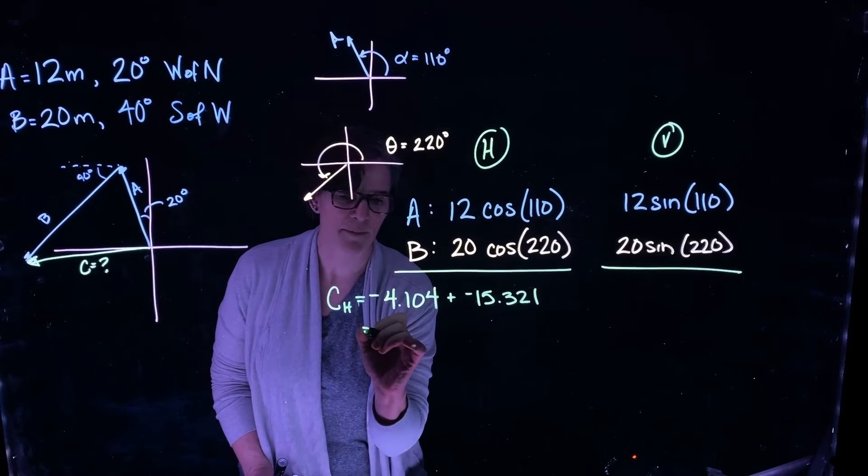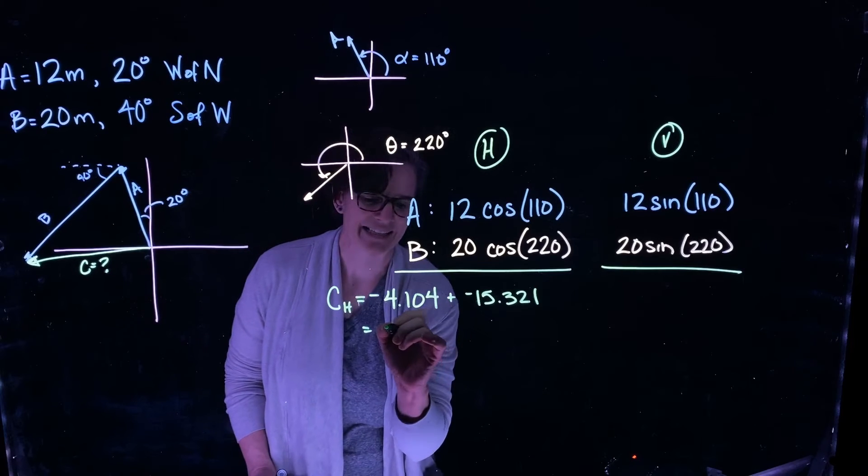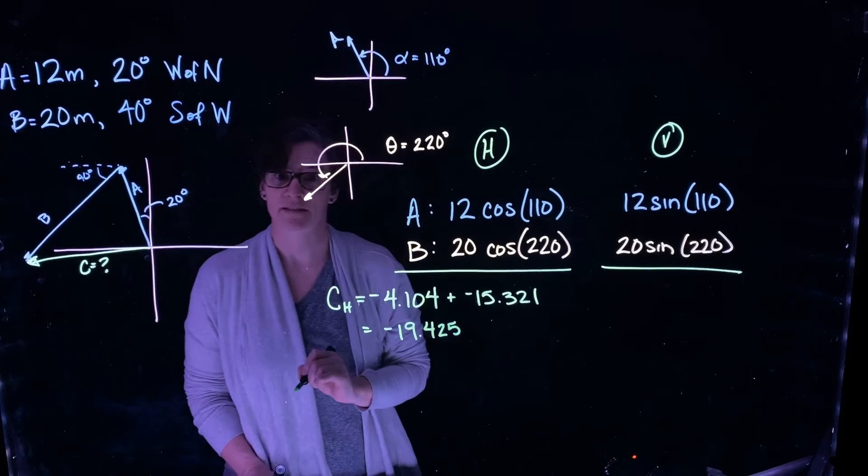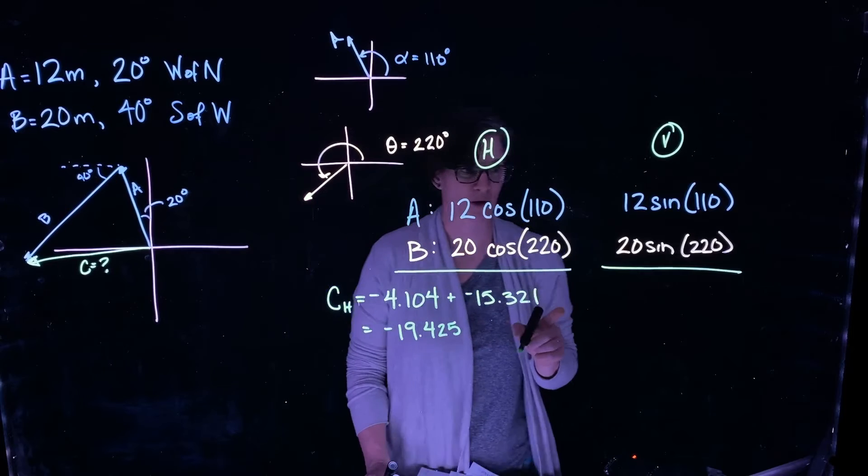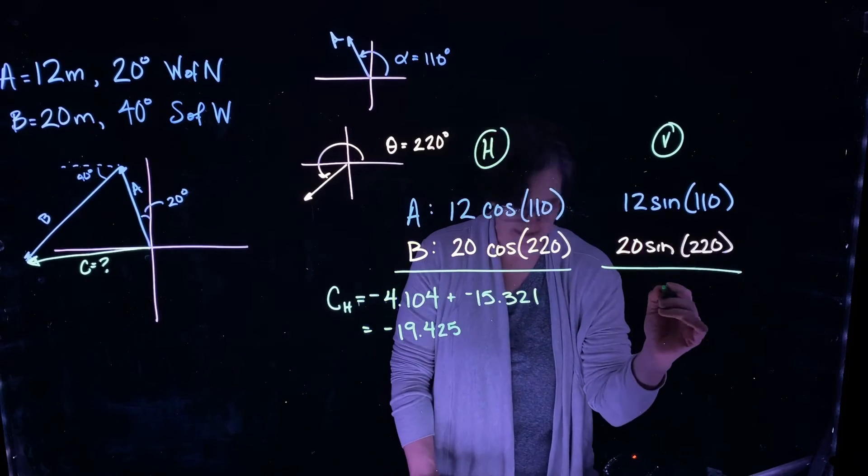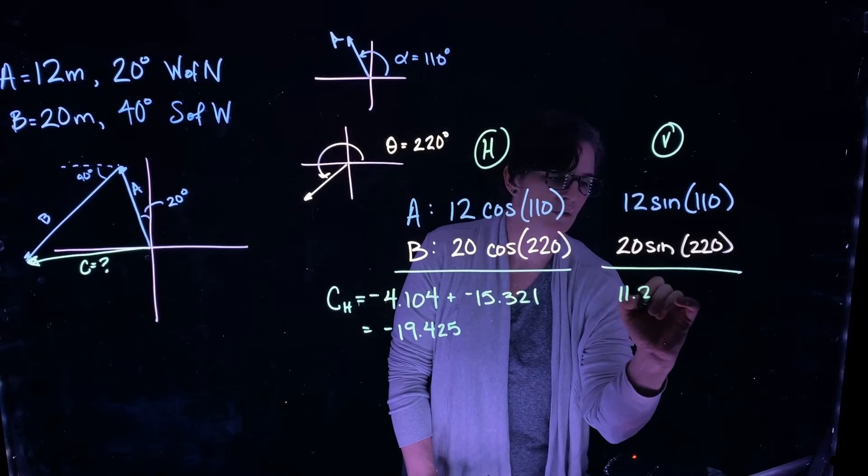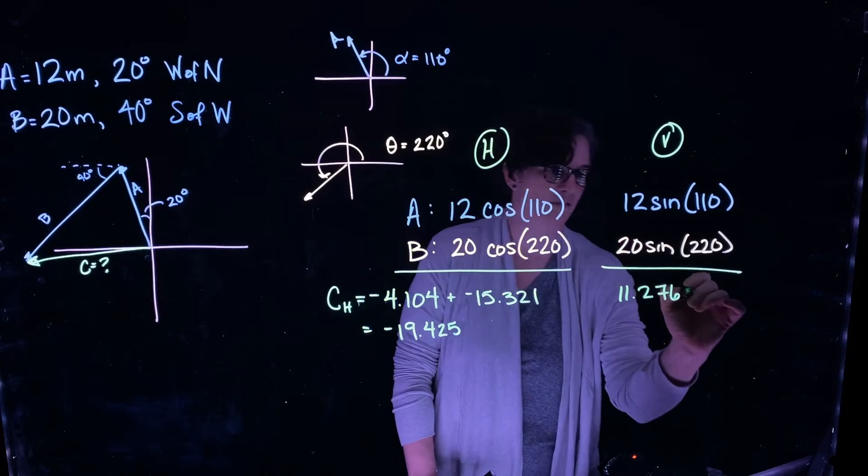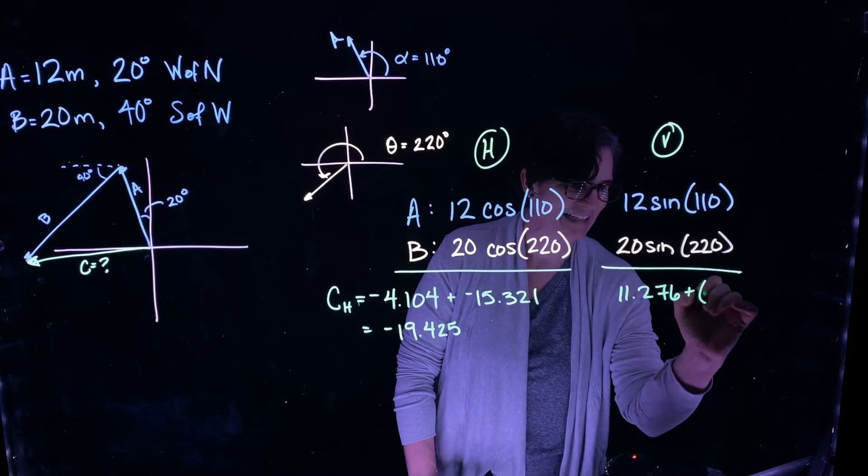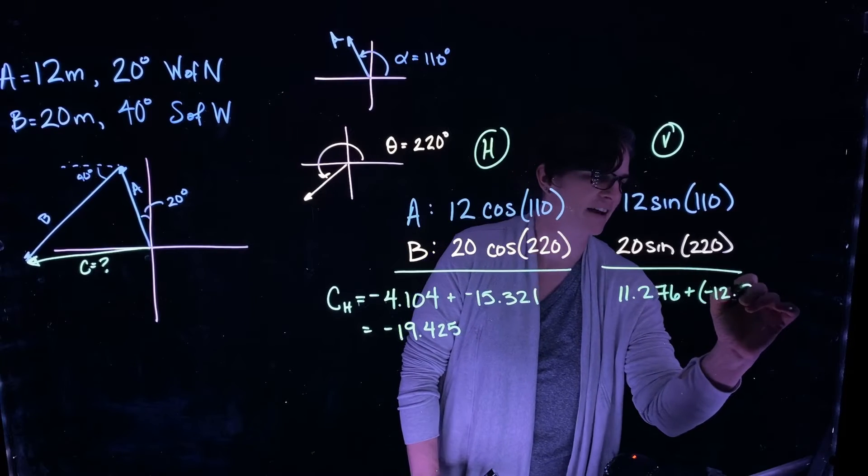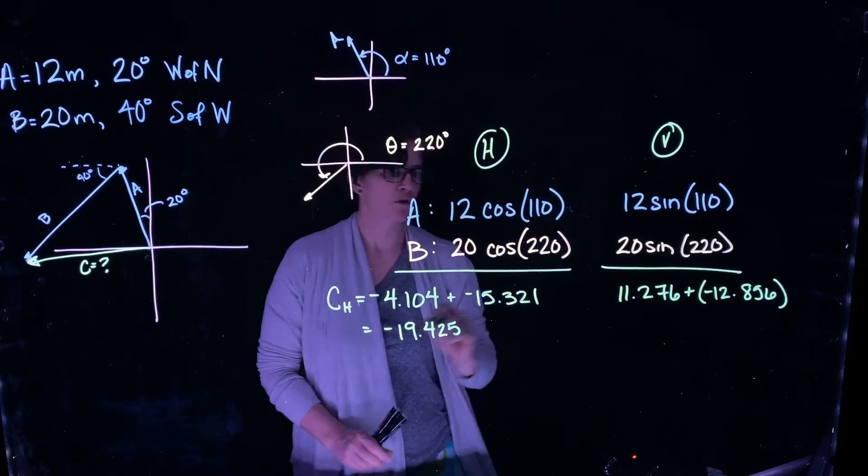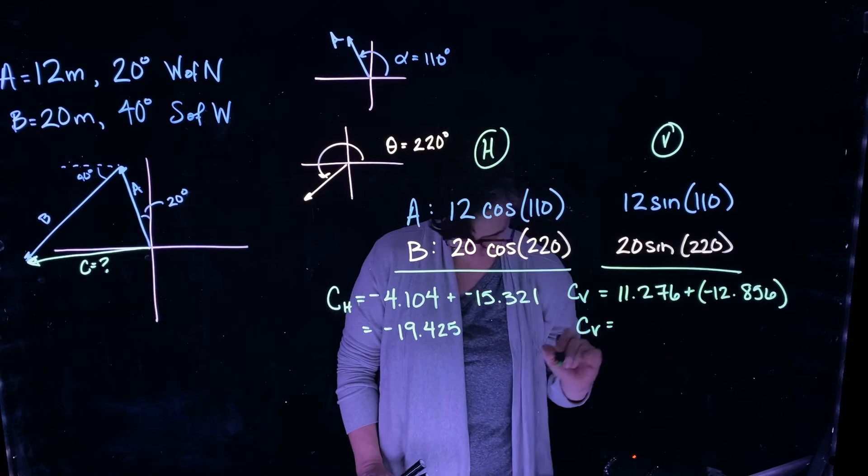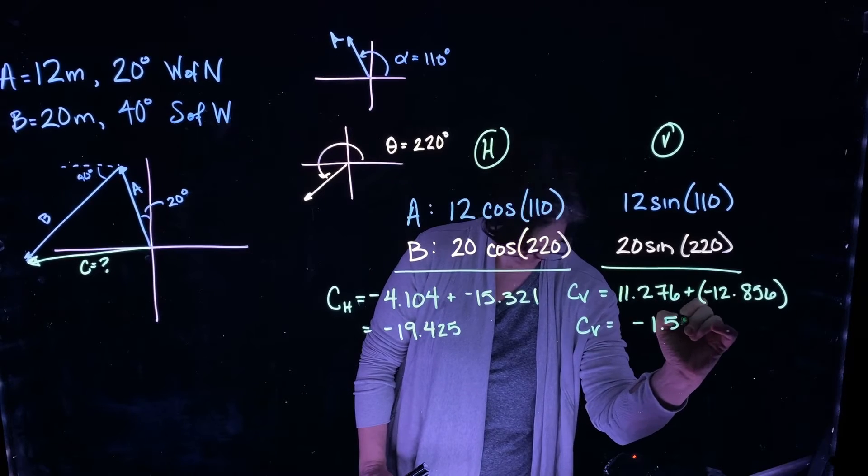So when I do that, my horizontal component of vector C is negative 19.425. That's the horizontal component of my vector C. What about the vertical component? Well, 12 sine of 110 is 11.276 plus 20 sine of 220 is negative 12.856. So my vertical component of vector C is equal to negative 1.580.